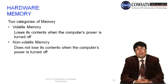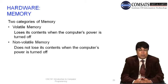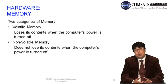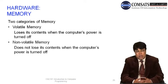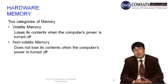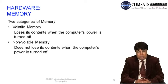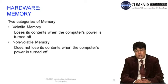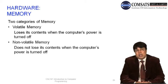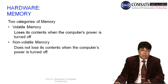Memory is a very important component of the computer and has two categories: volatile memory and non-volatile memory. Volatile memory is dependent upon power — if you lose power, you lose the information stored in it. Non-volatile memory does not require power, and certain technologies allow information to be retained even when power is unavailable.